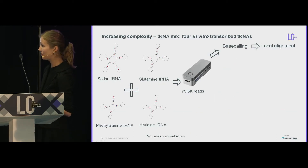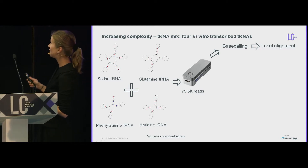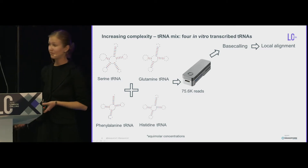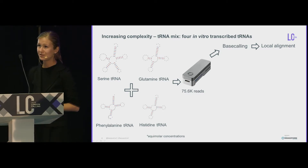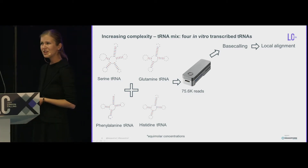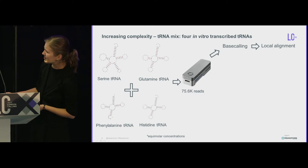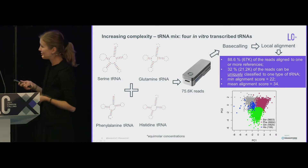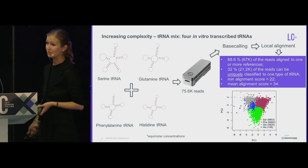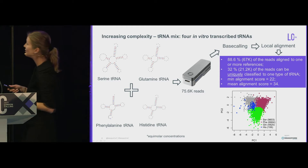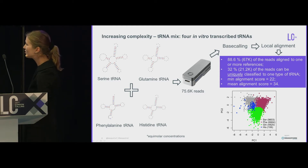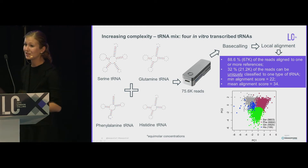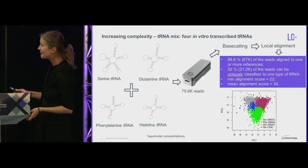We decided to increase the complexity a bit — we mixed four tRNAs in equal molar concentrations, sequenced them again, base-called, and did the same alignment. The question is whether we can distinguish between different tRNAs, because at the sequence level they're even more similar than at the structure level. Were we able to say whether it's serine or histidine? We were able to. After optimizing the cleanup and ligation procedures, we aligned almost 90% of reads with local alignment — already an improvement — but only a third of them could be clustered and classified. The clusters can be defined but are not completely distinguishable from each other.